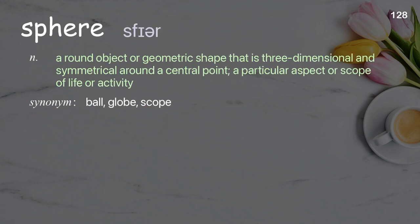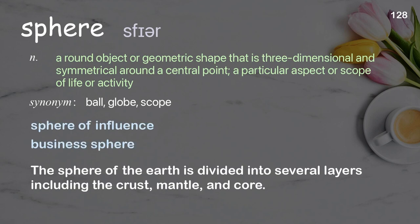Sphere. A round object or geometric shape that is three-dimensional and symmetrical around a central point; a particular aspect or scope of life or activity. Examples: sphere of influence, business sphere. The sphere of the earth is divided into several layers, including the crust, mantle, and core.